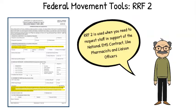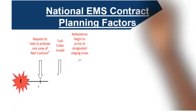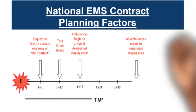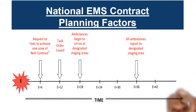We would also fill out the federal movement tool RRF2, which provides support to that contract. This form is used to order additional resources such as pharmacists, liaison officers, or overhead teams.